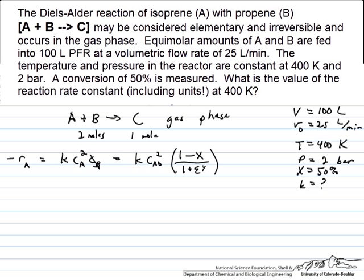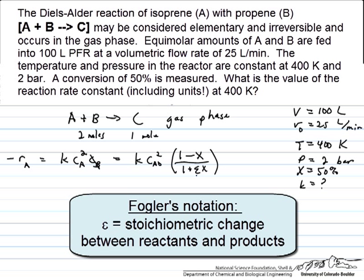In Fogler's notation, we have this 1 plus epsilon x here, where epsilon denotes this change in number of moles and the change therefore in the volumetric flow rate, so that's going to affect our concentration.